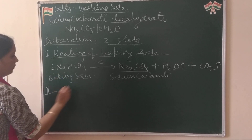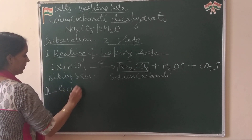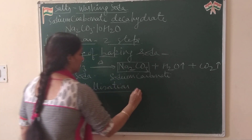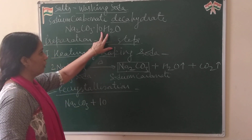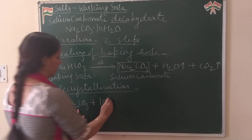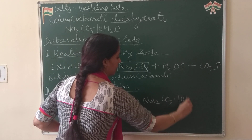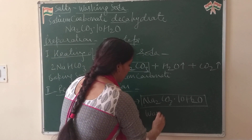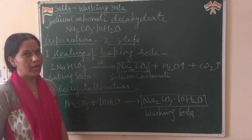In step 2, we do crystallization or re-crystallization of sodium carbonate. Na2CO3 requires 10 molecules of water to hydrate and form crystals of sodium carbonate: Na2CO3·10H2O. This is the product of interest and it is commonly called washing soda, with the chemical name sodium carbonate decahydrate.